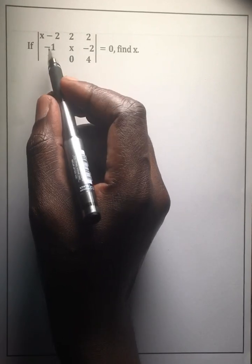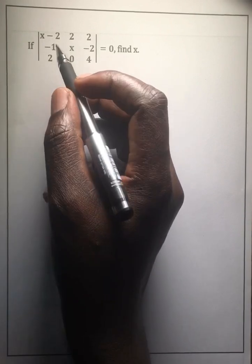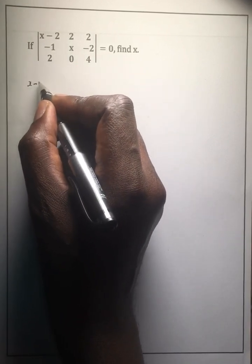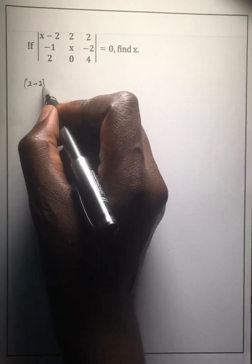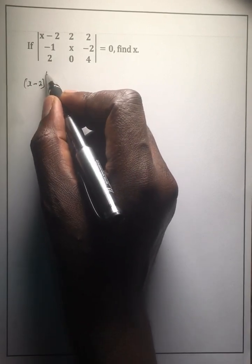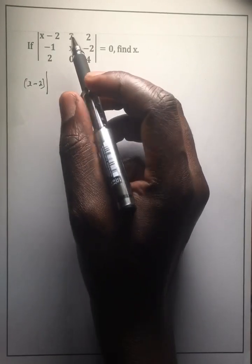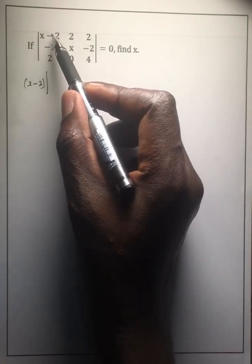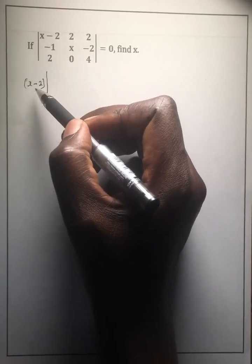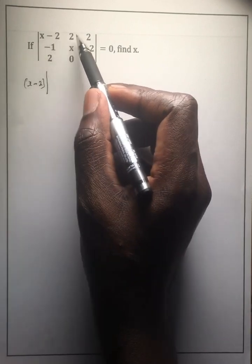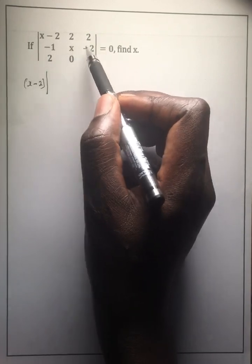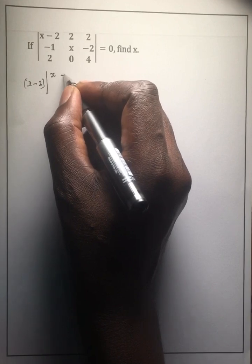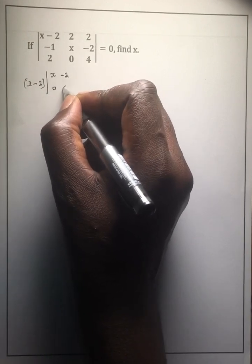The first thing you want to do is take the first entry, which is x minus 2. Then you come up with a small matrix obtained when you cover the row and the column for this particular entry. So if you cover that row and that column, you're left with the small matrix: x minus 2, 0, 4.